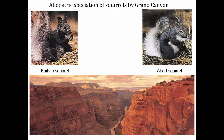Here's one example: the north and south rim of the Grand Canyon have two different species of squirrels. They're pretty similar to each other, but they have been diverged for about 10,000 or so years. If you're a terrestrial squirrel, it's kind of difficult to get across that big gap, so over that 10,000-year time span these two species have diverged.